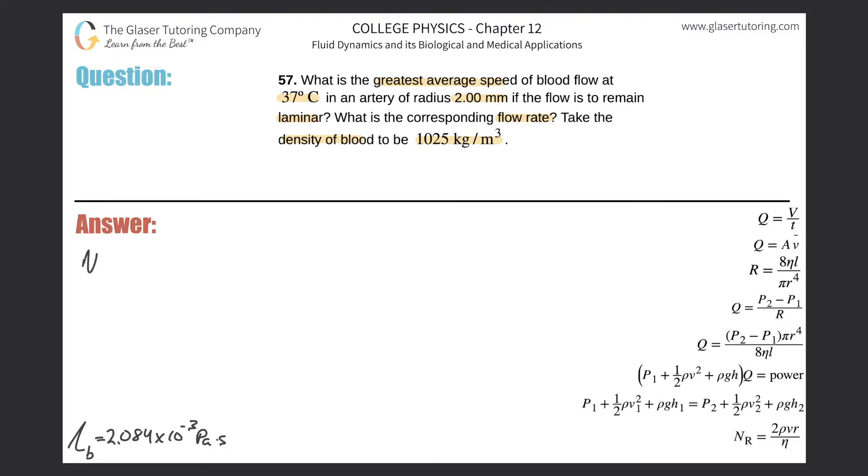When the Reynolds number N_R is greater than 3000, it's considered turbulent. When the Reynolds number is less than 2000, it's considered laminar. Anything in between is kind of a mix of both—could be turbulent, could be laminar.